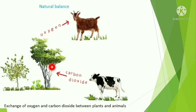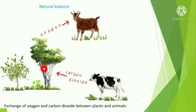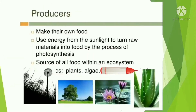Trees produce food with the help of chlorophyll and sunlight — this process is known as photosynthesis. Animals also eat plants, and trees give us oxygen. So plants and animals are both dependable on each other, and this relationship is known as interdependence. Next we will learn who are the producers.